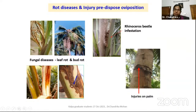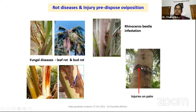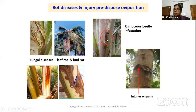Injuries on the palm are another predisposing factor. In some places, people make cuts on the stem for palm climbing — step cutting — which causes injury. That injury also emanates some kind of smell, and the weevil is attracted to lay eggs there. Another factor is rhinoceros beetle damage to the spindle and spear leaf region — the smell from this damage also attracts the weevil for egg laying.